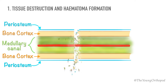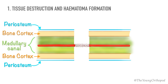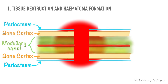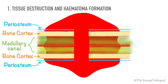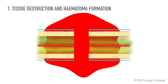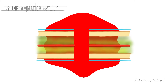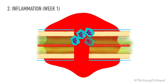Following a bone fracture, vessels are torn and a hematoma forms around and within the fracture. Within a few hours of the fracture, there is an acute inflammatory reaction with influx of inflammatory cells from surrounding soft tissues.